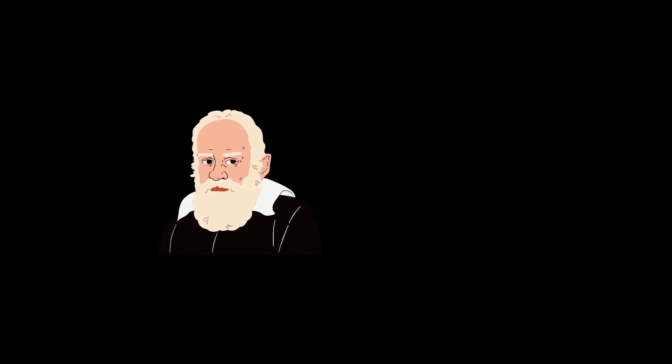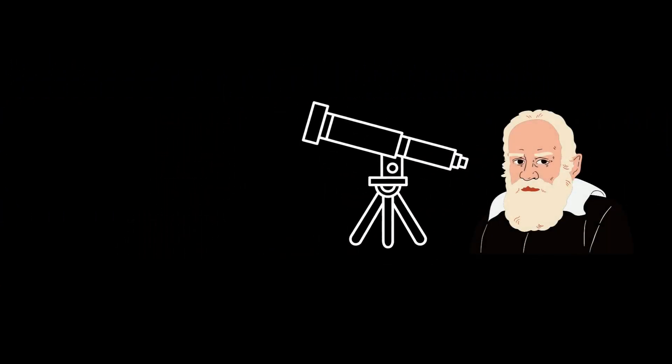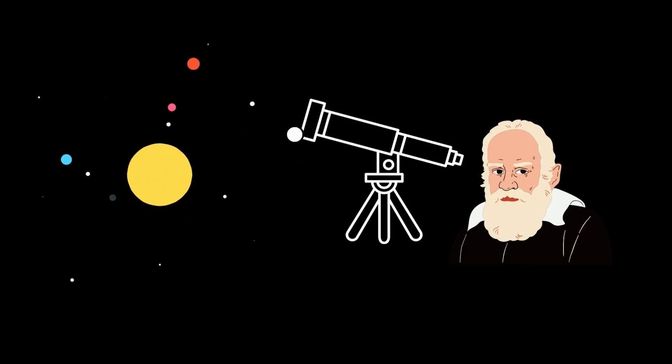Furthermore, Galileo's work on the telescope and observations of celestial bodies helped to support the Copernican model of the solar system, which placed the sun at the center and the planets in orbit around it. This work challenged the Aristotelian view of the universe and paved the way for the development of modern astronomy.